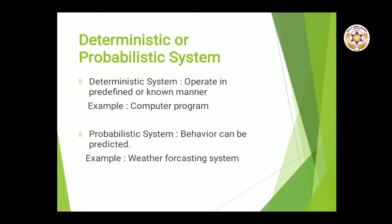Probabilistic system means it runs on probability — lagbhag, humko uski exact state pata nahi hoti. For example, agar main aapko bolun ki kal baarish hogi — aapko pata hai ki kal baarish ho bhi sakti hai, or nahi bhi ho sakti hai. Whether it will rain or not is not confirmed — that is probabilistic.